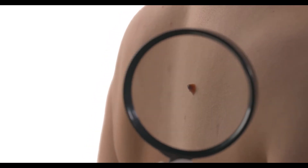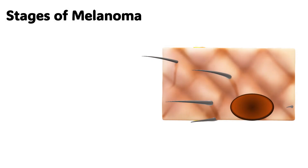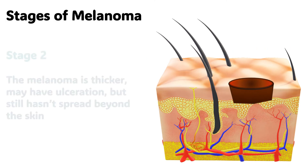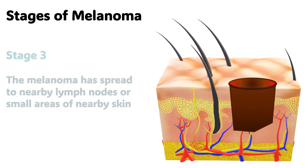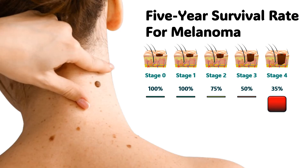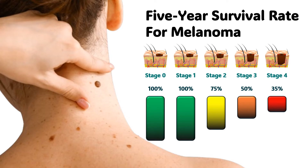Are you worried about a suspicious mole? Melanoma is a form of skin cancer that develops within a mole, and if left untreated can be fatal. Early detection of melanoma can save your life. The five-year survival rate for melanoma at stage 4 is only 35%. This rises to 100% when melanoma is detected at stage 0 and 1.